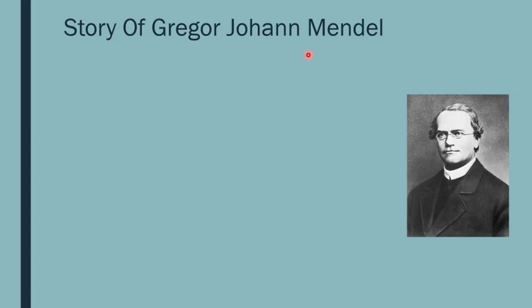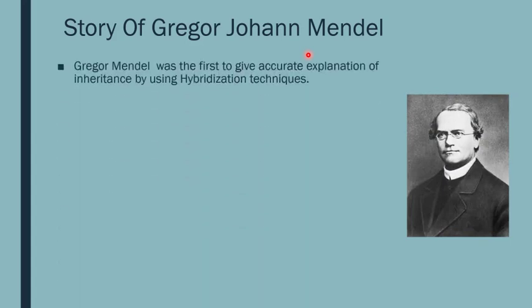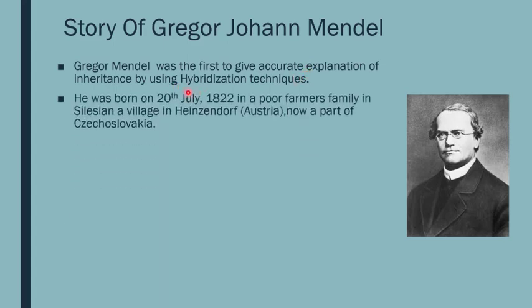Now let us see the story of a great man, Gregor Johann Mendel. Mendel was the first one to give an accurate explanation of inheritance using hybridization techniques. He was born on 20th July 1822 in a poor German farmer's family in Heinzendorf, which is now a part of Czechoslovakia — at that time it was part of Austria.